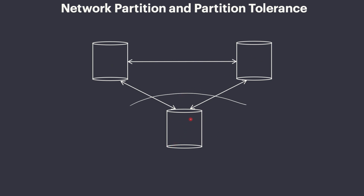This is basically network partition. If we design a system in a way that can withstand this kind of problem, we call that a partition tolerant system. In this case, if the node in North America is still accessible, the applications in North America can still connect to this database.